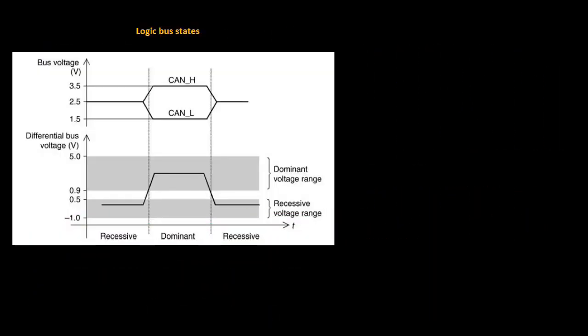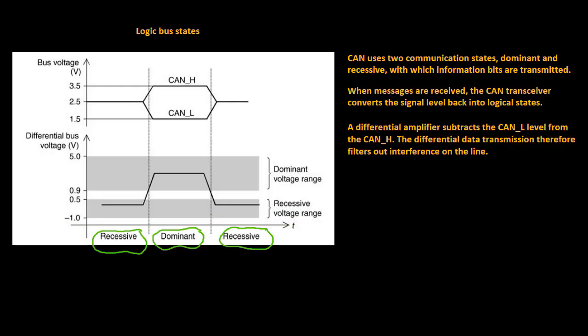The CAN uses two communication states, dominant and recessive, with which information bits are transmitted. When messages are received, the CAN transceiver converts the signal level back into logical states. A differential amplifier subtracts the CAN low level from the CAN high level. The differential data transmission therefore filters out interferences on the line.